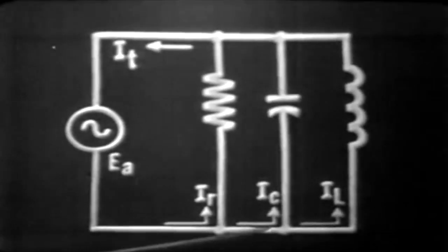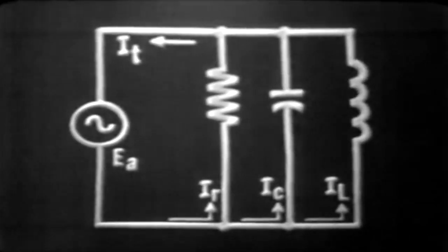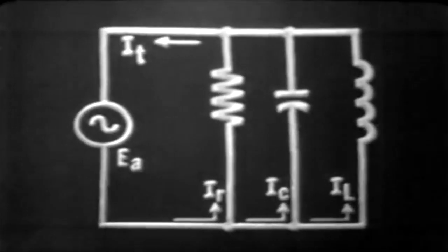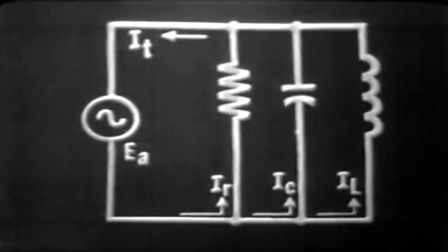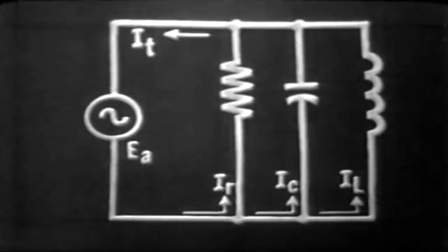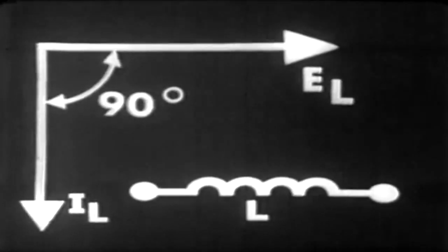Our third current would be our inductive current, IL. We know that the voltage across and the current through any pure inductive component is also 90 degrees out of phase, but the current lags the voltage by 90 degrees. IL lags EL by an angle of 90 degrees.